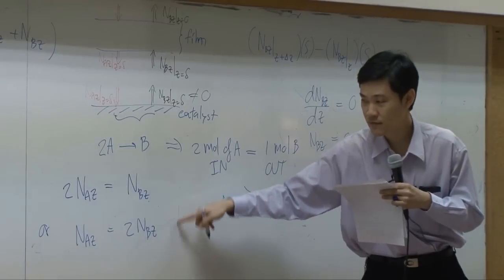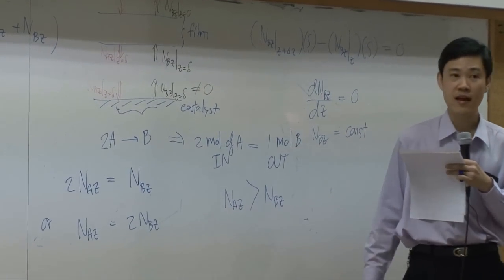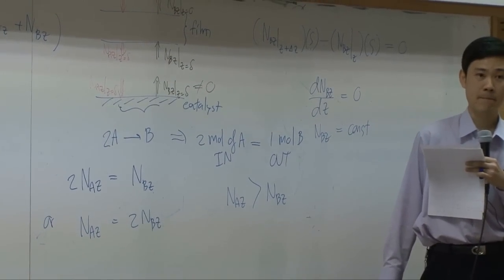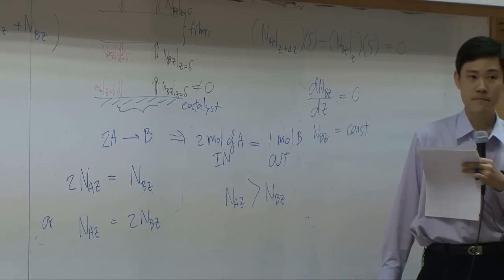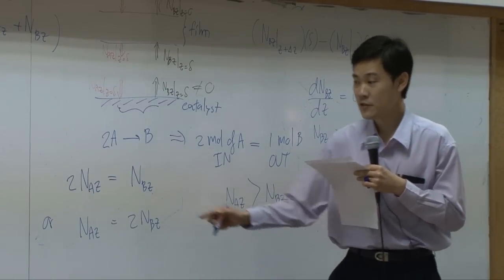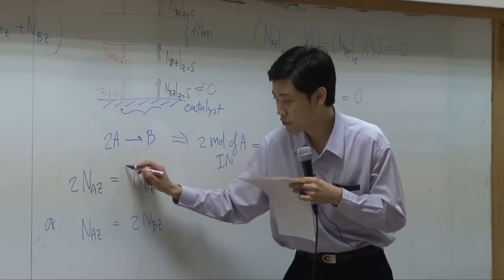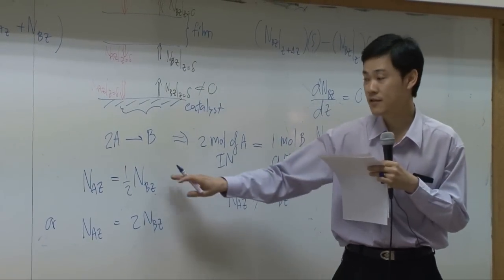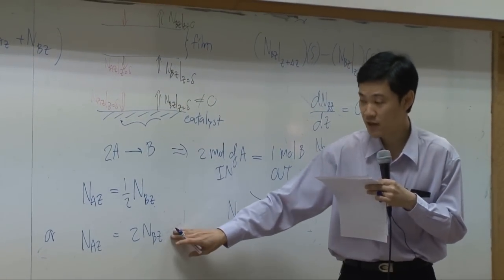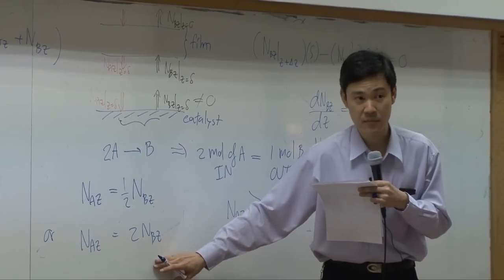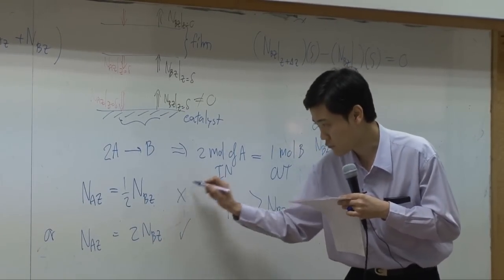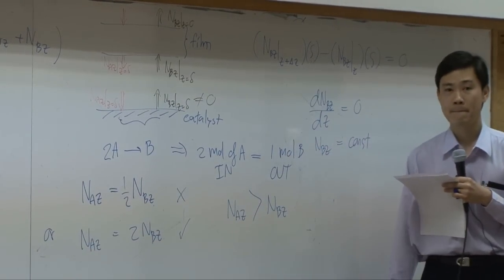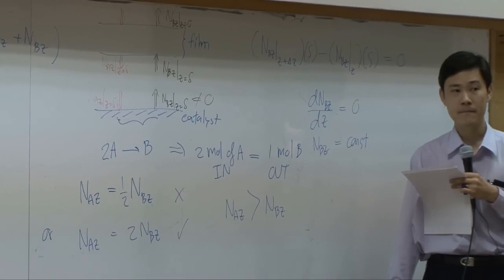Which one makes N_A greater than N_B? This one means N_A equal to 1 over 2 N_B, right? This one is only half of N_B. This one is twice as much of N_B. So this one is correct. This one is not. Understand?